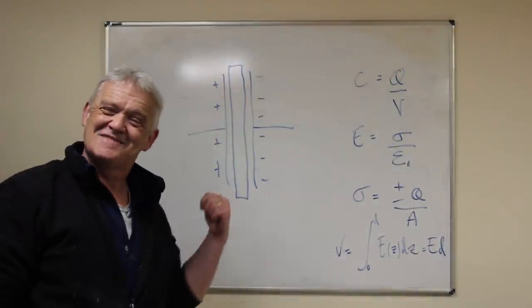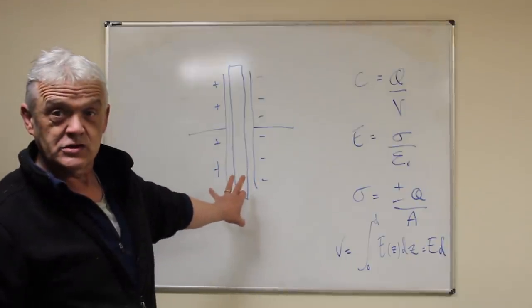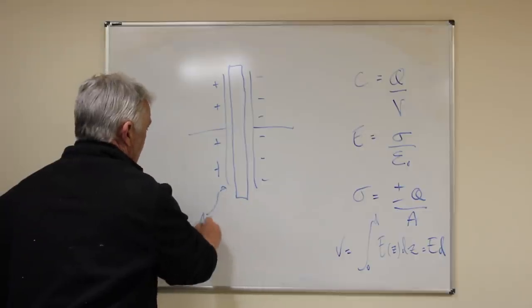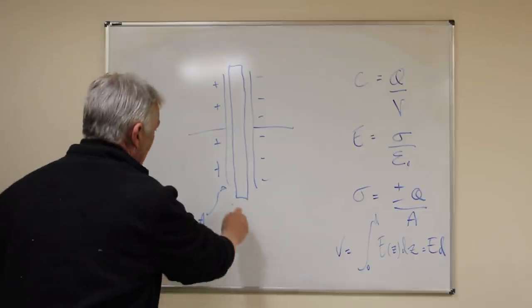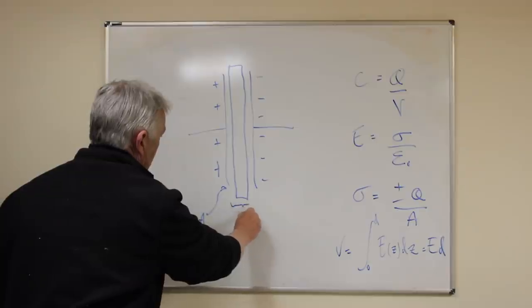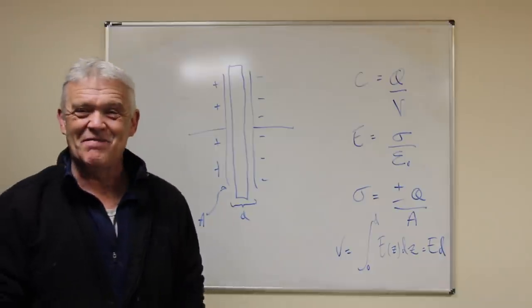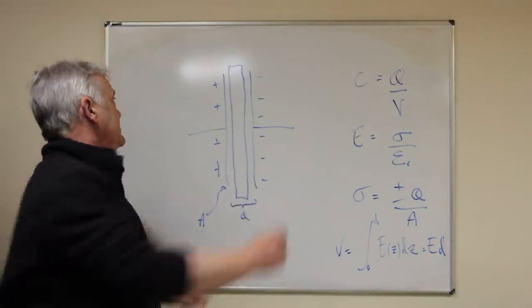There are certain things that matter. We've got these plates which have an area A, they're also a certain distance apart which we can call d for distance apart, and they have this material in there which is the dielectric.